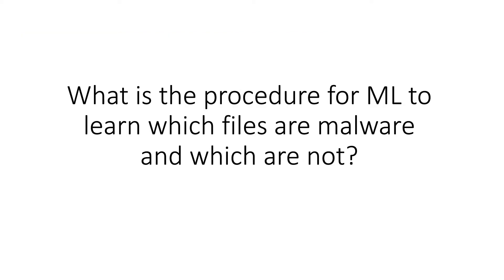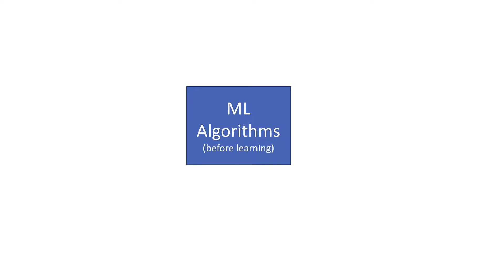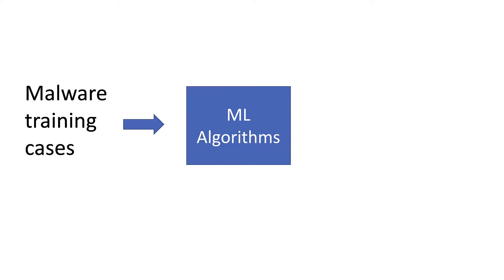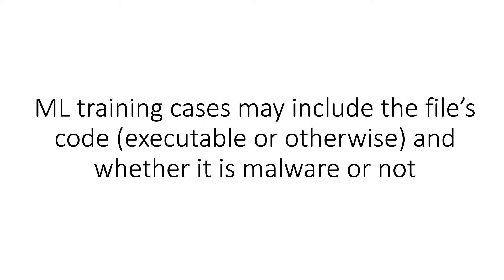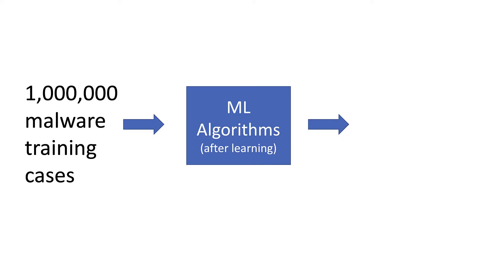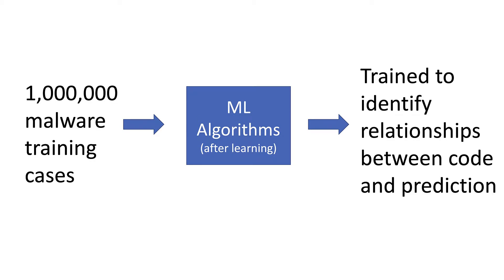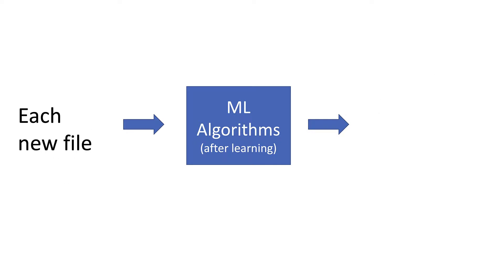So what is the procedure for machine learning to learn which files are malware and which are not? Machine learning algorithms start with parameters that need to be tuned based on the data they see. We provide malware training cases — the code or files presented to the algorithms — along with labels indicating whether each is malware or not. The machine learning algorithm is then trained on one million cases, some malware and some not, to identify the relationships between the code and the prediction. After training, each new file is presented to the algorithm, which can then assess whether it is malware or not.